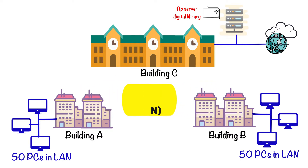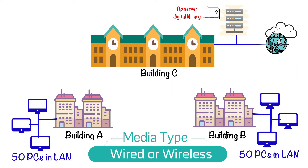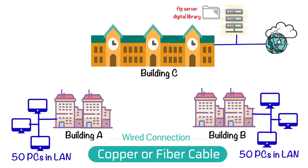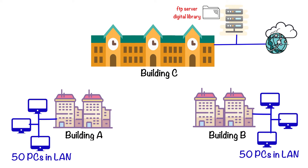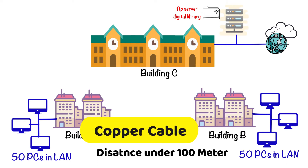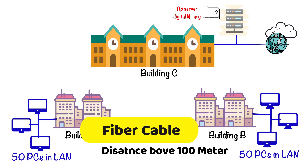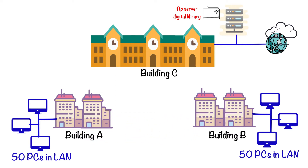That is where the campus area network comes in, but to form it we need the appropriate media. From the media perspective, media can be either wired or wireless. If we are using wired connectivity, it could be copper cable or fiber cable. However, copper connectivity has its own limitation — it cannot go beyond 100 meters. If the distance between devices is under 100 meters, we can use copper cable, but if the distance is above 100 meters, we should use fiber cable.